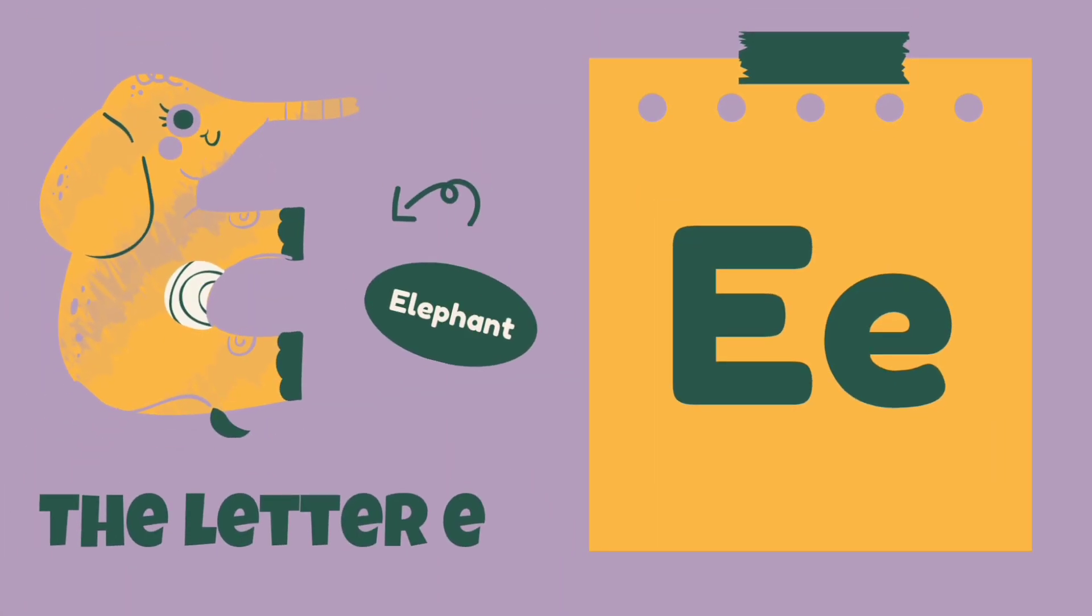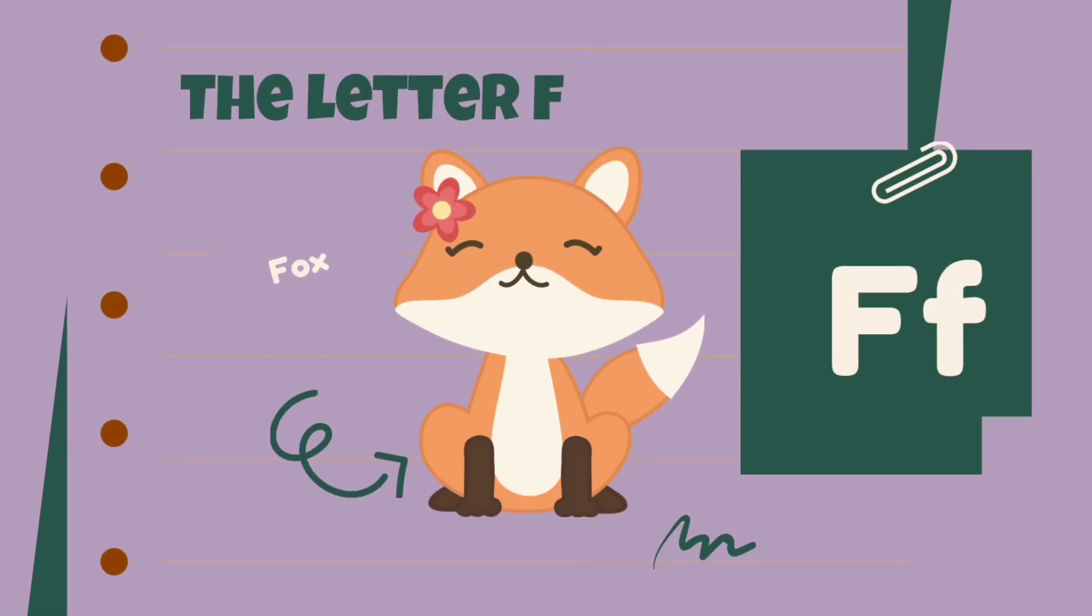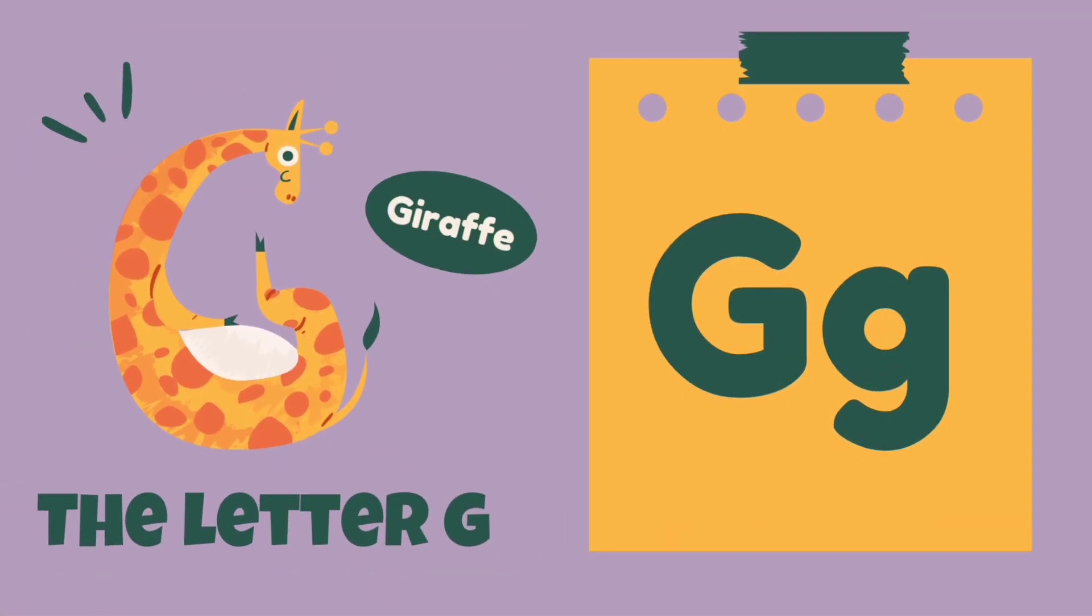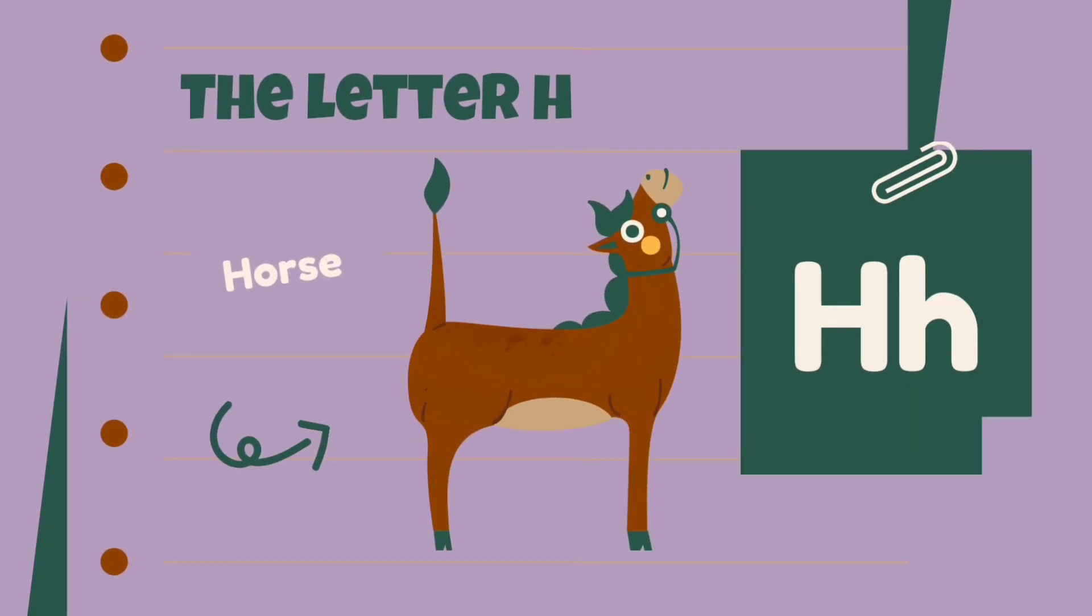E is for elephant, elephant. F is for fox, fox. G is for giraffe, giraffe. H is for horse, horse.